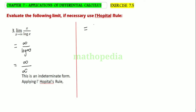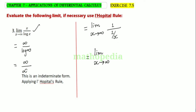Equal to limit x tends to infinity. We now differentiate this. Numerator x differentiates to 1; denominator log x differentiates to 1/x. So we get limit x tends to infinity of 1 divided by (1/x), which gives x. Applying the limit, we get infinity.